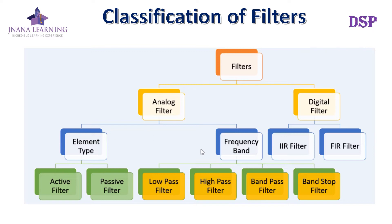Based on frequency band, we have four types: low pass filter, high pass filter, band pass filter, and band stop filter. A low pass filter allows low frequencies from zero up to a particular critical frequency and blocks the others. A high pass filter allows high frequencies from a critical frequency to infinity and blocks the low frequencies.